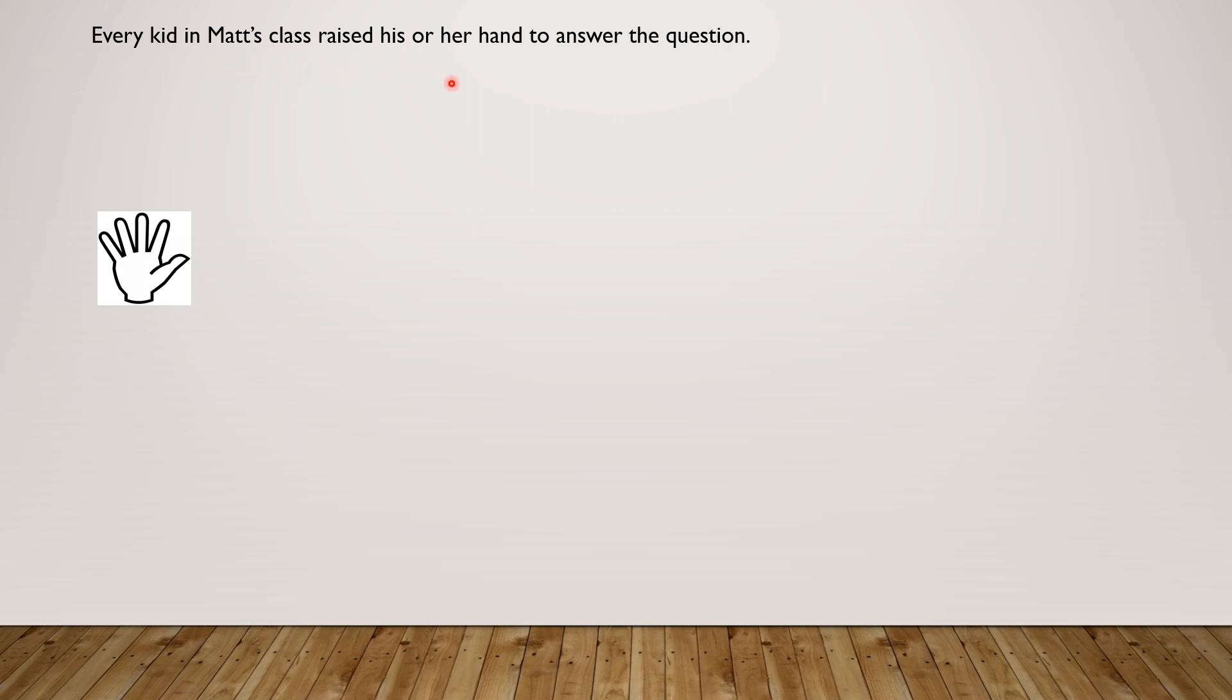Every kid in Matt's class raised his or her hand to answer the question. When we want to answer a question, we raise one hand. So one hand represents one kid, or we can say five fingers represents one kid.